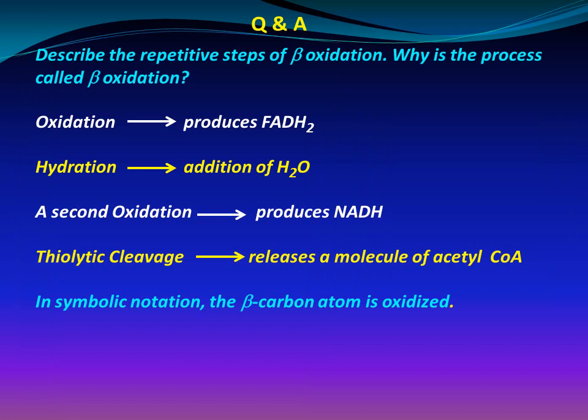Question: describe the repetitive steps of beta oxidation and why the process is called beta oxidation. The repetitive steps are: oxidation producing FADH2, hydration adding a water molecule, a second oxidation producing NADH, and thiolytic cleavage releasing a molecule of acetyl-CoA. In symbolic notation, the beta carbon atom is oxidized — that is why it is called beta oxidation.